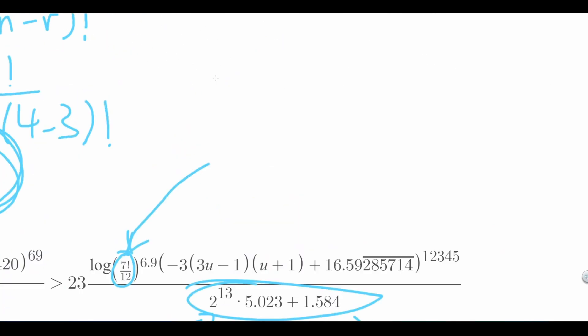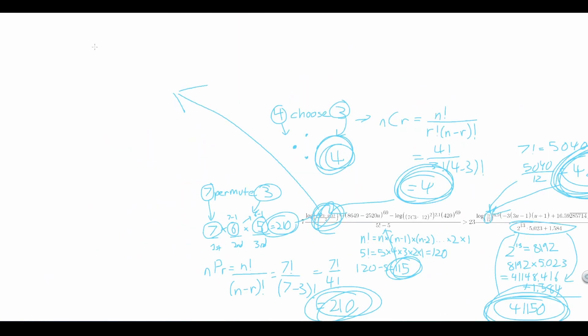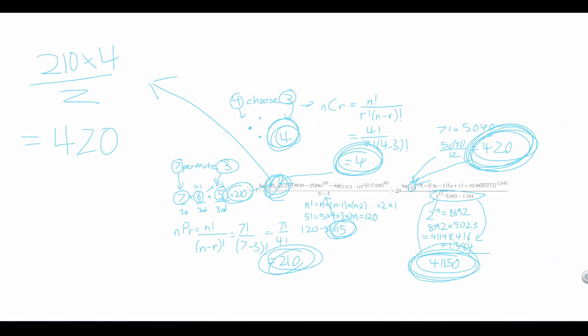Next, we can look at this. 7 factorial divided by 12 is equal to 5,040 divided by 12, which is 420. We can go back and simplify this by another occurrence. This would be 210 times 4 divided by 2, which is equal to 420.